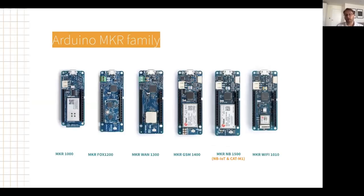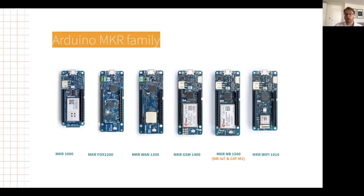This is the MKR family of devices. Going from left to right, we have the MKR 1000 which is Wi-Fi based, the FOX which is SIGFOX, the WAN which is LoRa, the GSM module which is 3G and 2G fallback, and the MKR NB which is NB-IoT and CAT-M1. All of these boards have the microcontroller with a connectivity module alongside. Depending on your application — if you have Wi-Fi available or if you're somewhere remote doing agriculture — there's something in the same form factor with the connectivity that suits you.